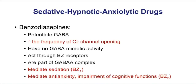Let's look at benzodiazepines and specifically focus on their mechanism. This is a classic mechanism that you must be familiar with. Benzos are going to potentiate GABA. If you remember from our earlier discussion back in General Principles, we discussed the concept of potentiation. The dose-response curve is going to shift to the left. GABA all by itself, and then benzos plus GABA will shift that GABA dose-response curve to the left, essentially indicating an increase in potency.